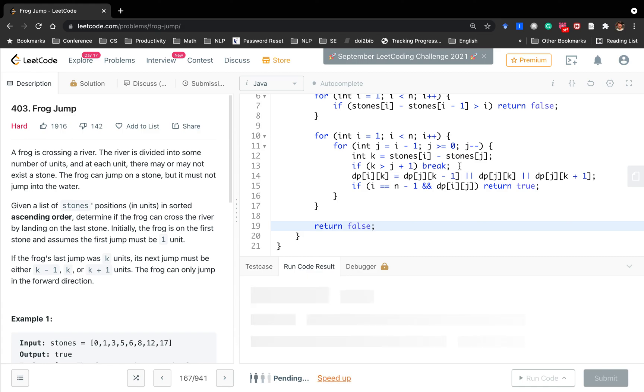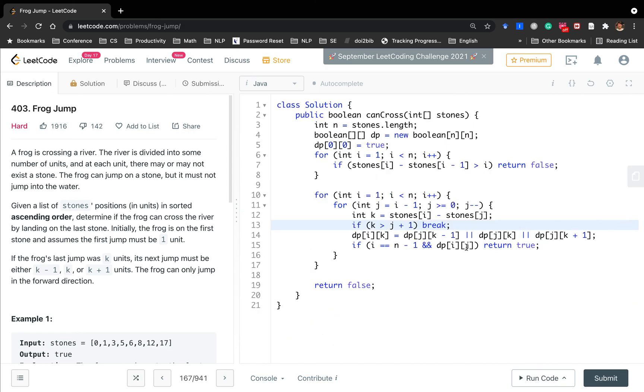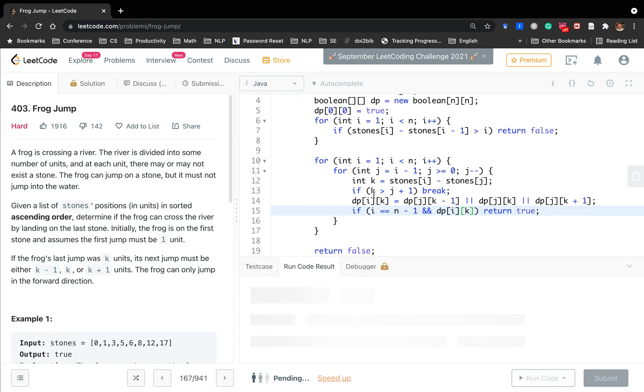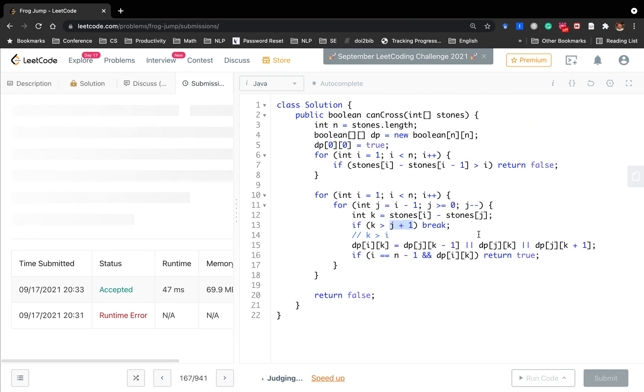I think this part you should notice. Something is wrong. Oh, sorry, it's not i, j, it's i, k. This part, you must write k greater than j plus 1. If you write k greater than i, then you actually have a larger scope. But it actually depends on which stone it comes from. So you should write with regard to j.